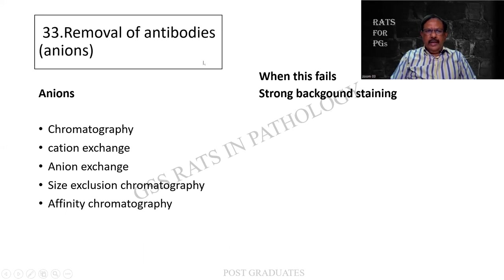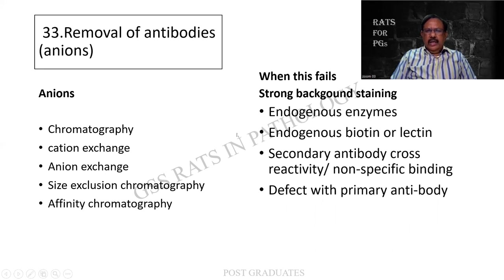How do you remove the antibodies? By chromatography - cation exchange, anion exchange, size exclusion chromatography, affinity chromatography. And when this fails, there will be a strong background staining because of endogenous enzymes, endogenous biotin or lectin, secondary antibody, and defect in the primary antibody.